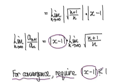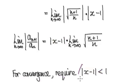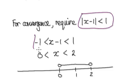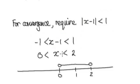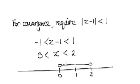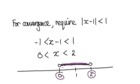Another way of writing this is to rewrite the inequality, then add 1 to everything — add 1 on the left, add 1 in the middle, add 1 on the right — which gives you the interval 0 < x < 2. So we know for sure that anything in this open interval will converge; the series will converge for sure.